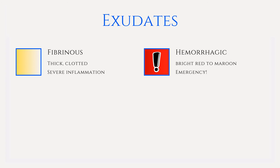Hemorrhagic exudate entails a rapid response and sometimes emergency treatment, as it is frank blood — bright red to maroon in color — gushing from a blood vessel. This can be caused from rupture or necrosis of blood vessel walls, and examples include sites of tissue trauma and hematomas.